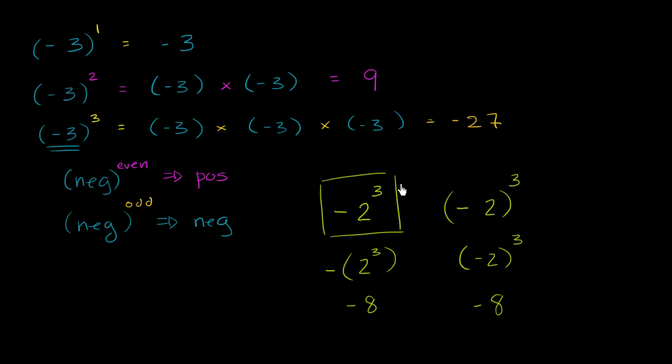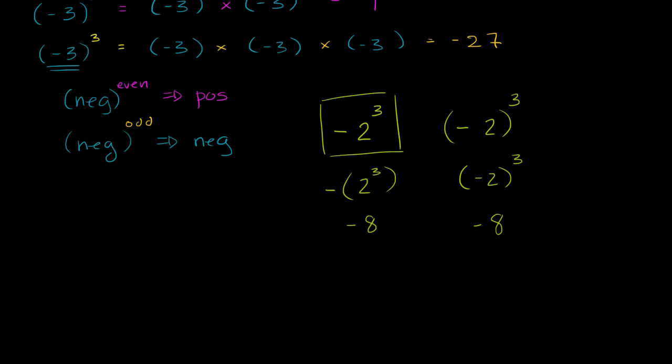Well, what if these were even exponents? So what if someone had these two expressions? Negative 4 squared, or negative 4 squared. This one clearly evaluates to 16, positive 16. It's a negative 4 times a negative 4. This one could be interpreted as, especially if you look at order of operations and you do your exponent first, this would be interpreted as negative 4 times 4, which would be negative 16.